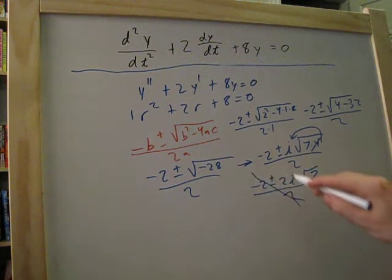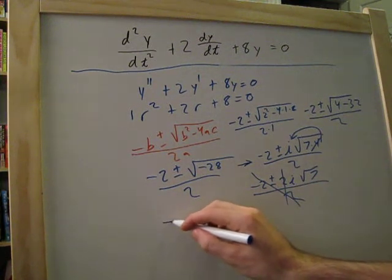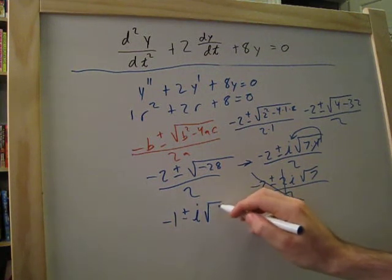Okay, so now we can simplify this out and that out. Get rid of the 2's here. So, now we have minus 1 plus or minus i times the square root of 7.